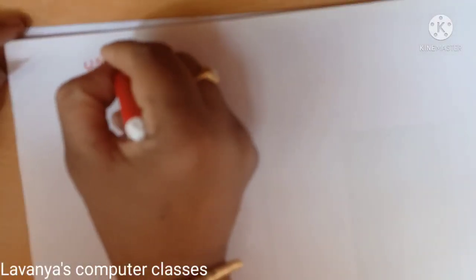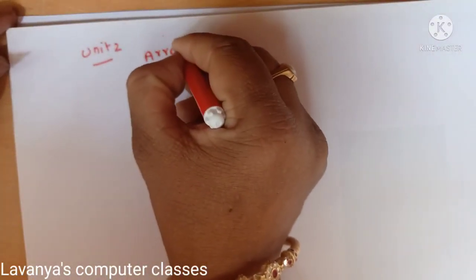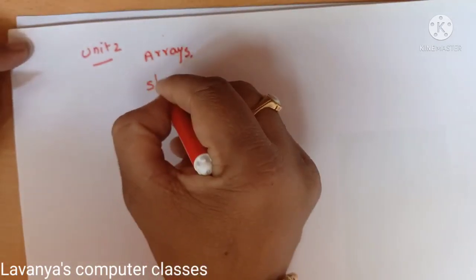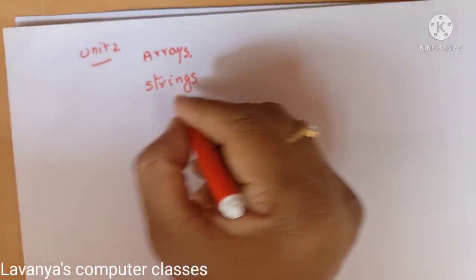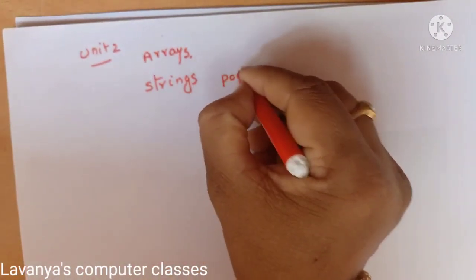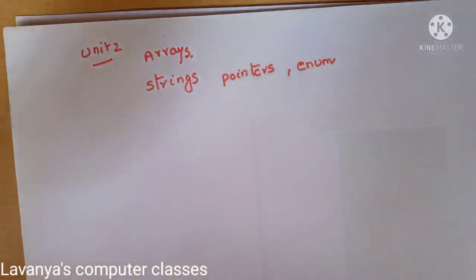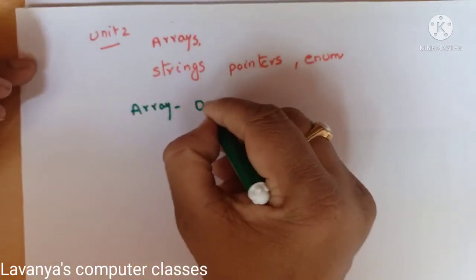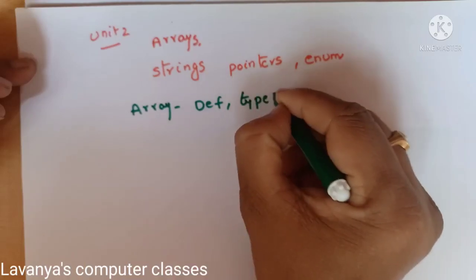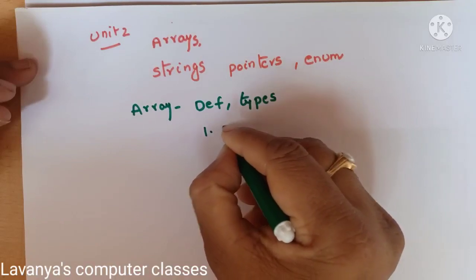Next, Unit 2. In Unit 2, we have arrays, strings, pointers, and enumeration data type — these four concepts are there. In arrays, a very very important question is: what is an array definition? Types of arrays — double-dimensional arrays and single-dimensional arrays. Programs are very very important.